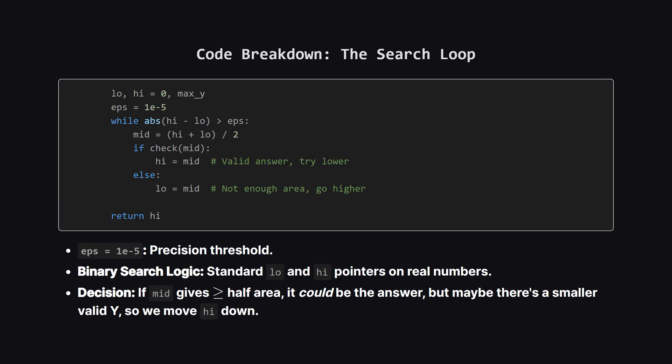Then we have the binary search itself. Since we are searching for a decimal value, not an integer, we don't look for an exact match. Instead, we keep shrinking our search window until the difference between our high and low bounds is smaller than 10 to the power of negative 5. If our check function returns true, it means we have enough area below, so we try to find a lower valid line by moving the high pointer down. If we don't have enough area, we move the low pointer up.